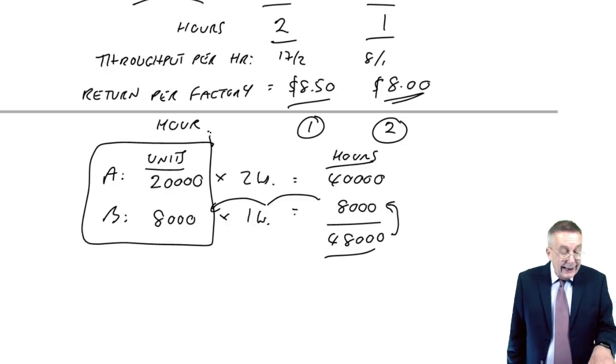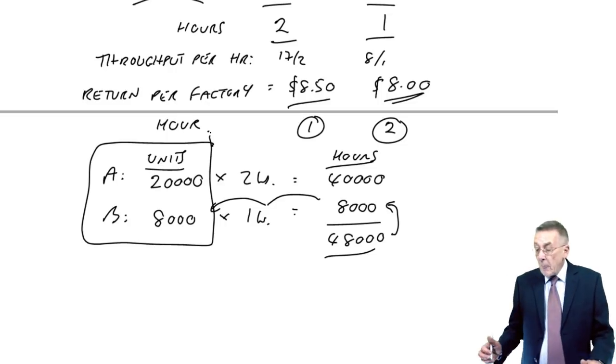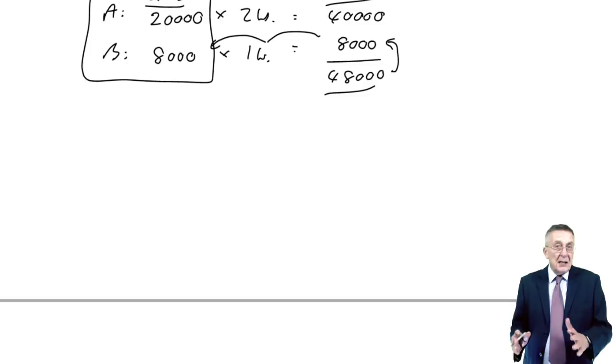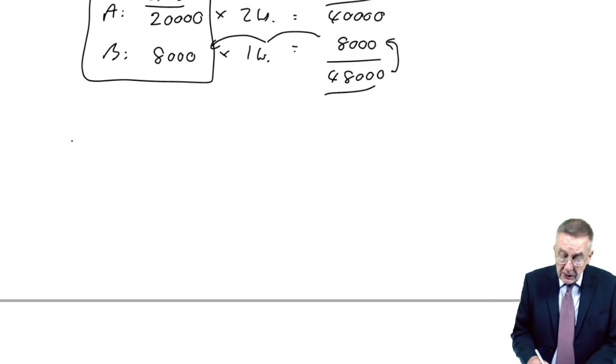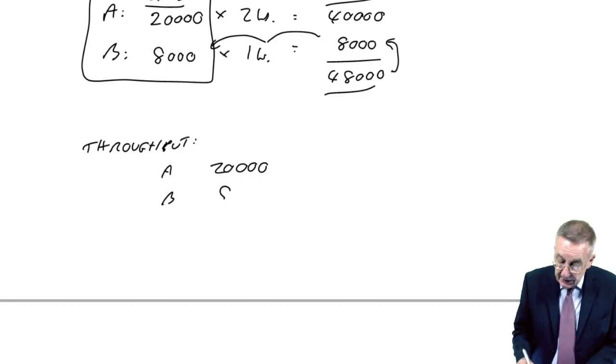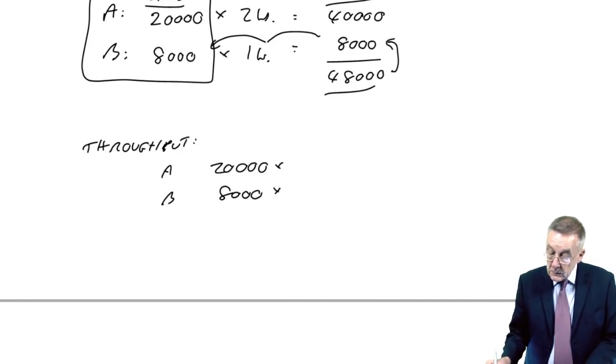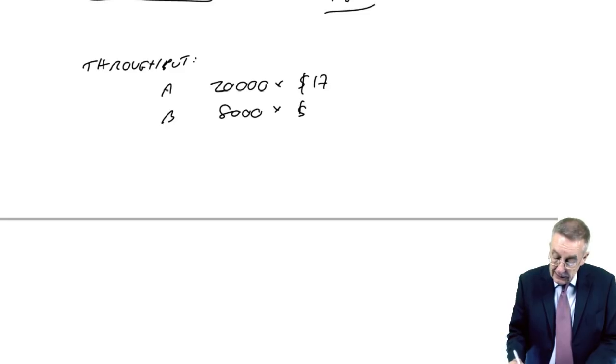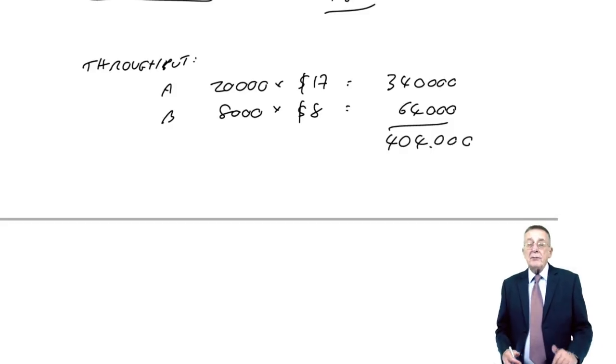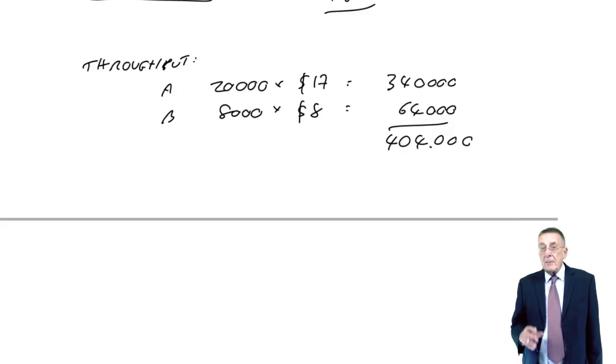On this approach, there is our optimal production plan. This does carry on and want to know what the maximum profit is. And a bit like last time, this bit's unlikely, but I'll do it to be safe. We know how many of each we're going to produce. So the total throughput that we'll get: it's 20,000 A's, 8,000 B's. And the throughput per unit, 17 and 8. So a total of 404,000.